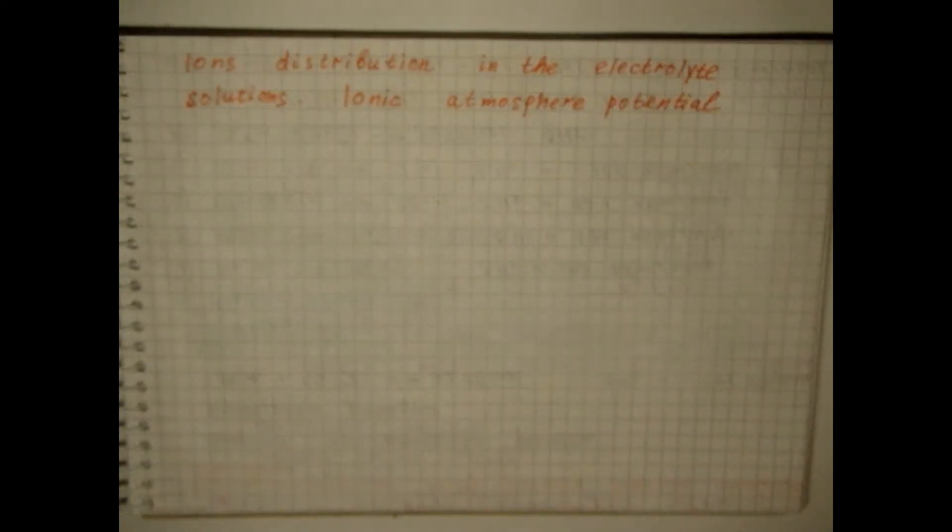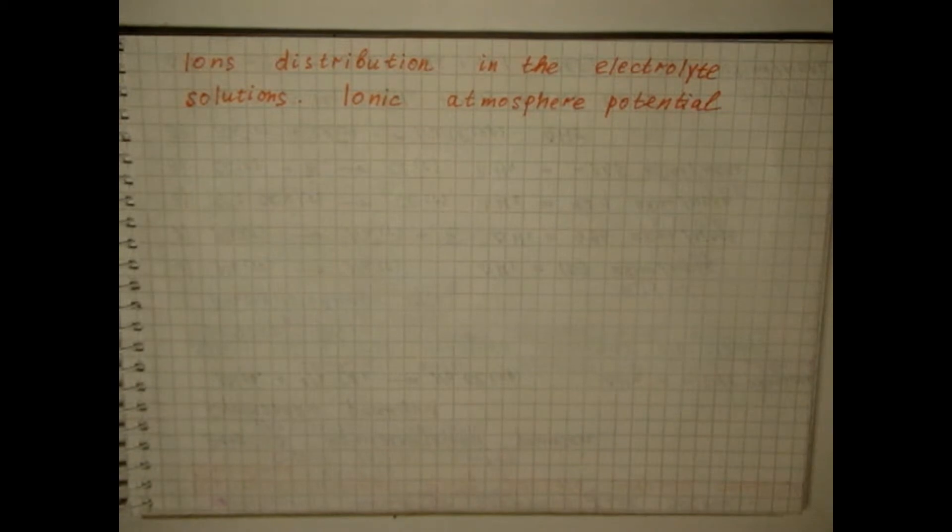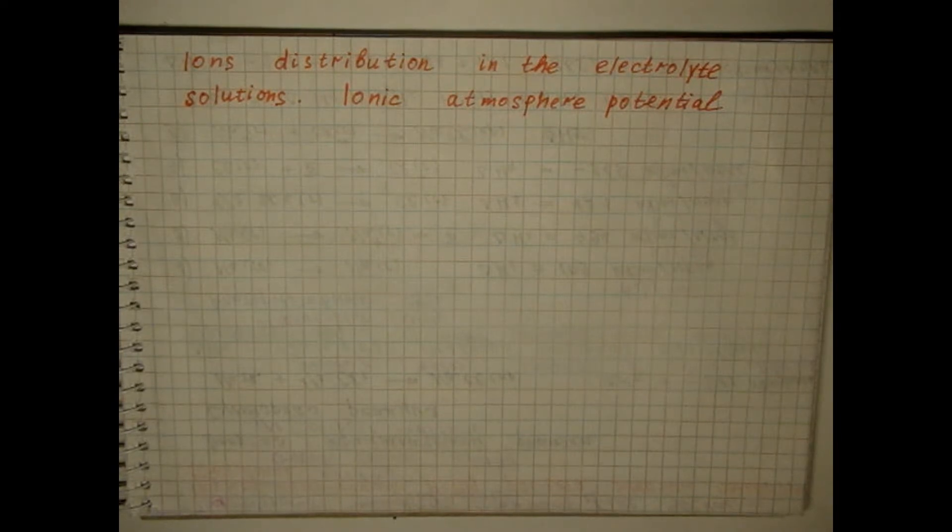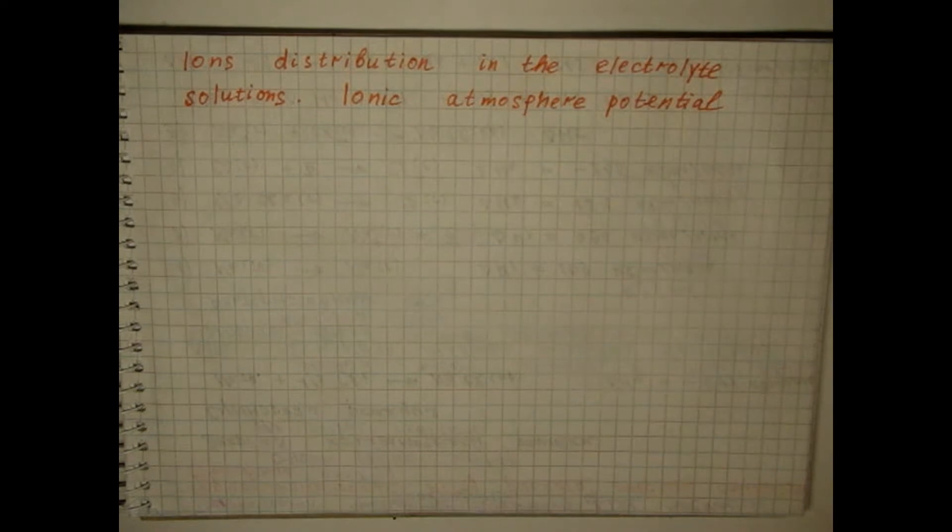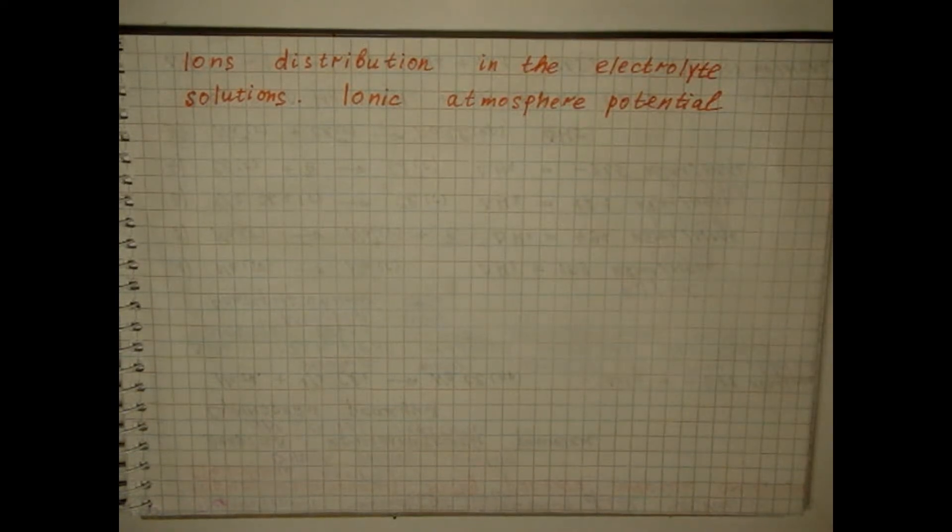To describe the ion-ion interaction, it is necessary to know the distribution of ions in solution and the nature of the forces between the ions. This task is very difficult because the ions and dipoles of the solvent are in chaotic motion, and ions can form associates, complexes, and undissociated molecules.